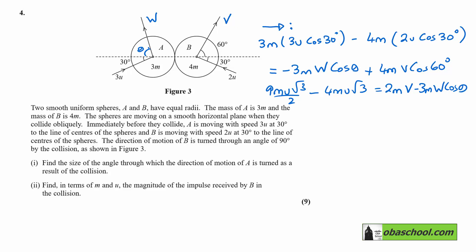So let's tidy that up a bit. And we're going to get mu root 3 on 2 is equal to 2M v. Take away 3M w cos theta.